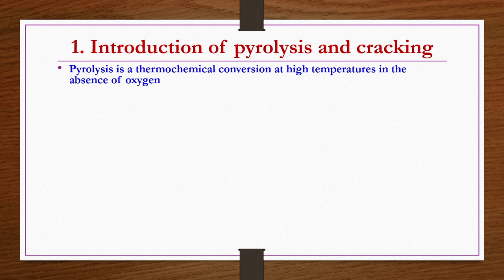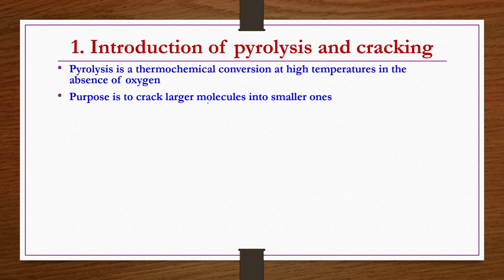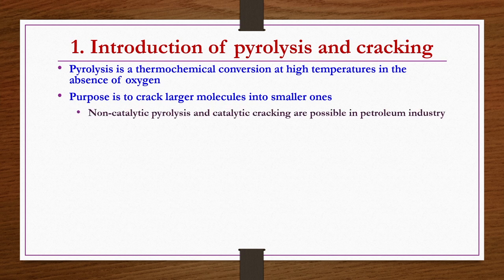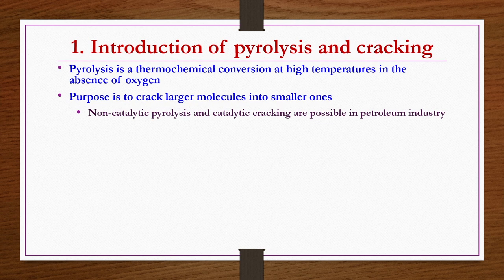What is pyrolysis? It is a thermochemical conversion occurring at high temperatures in the absence of oxygen. It is used to crack larger molecules into smaller ones. Crude petroleum contains C1 to C40 organic chemicals, and bigger molecules can be converted to smaller ones by pyrolysis. Pyrolysis can be non-catalytic or thermal pyrolysis, or catalytic cracking — two types of approaches possible in petroleum industries.